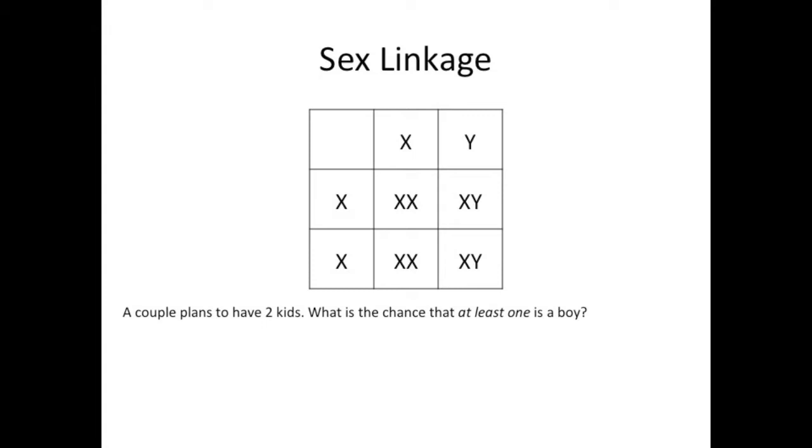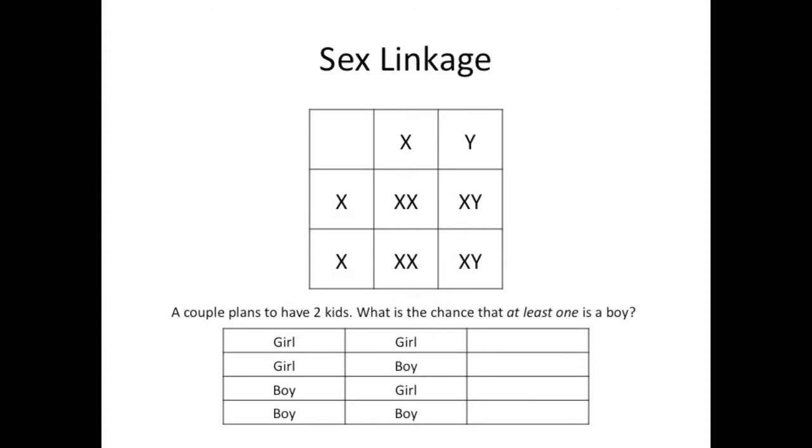There are a couple ways to do this question. The first way is to lay out all the possible outcomes, whether you do it in a table, as I have here, or the branching method is irrelevant. But as you can see, in three of the four outcomes, there is at least one boy. Now, we need to figure out the likelihood of each outcome.